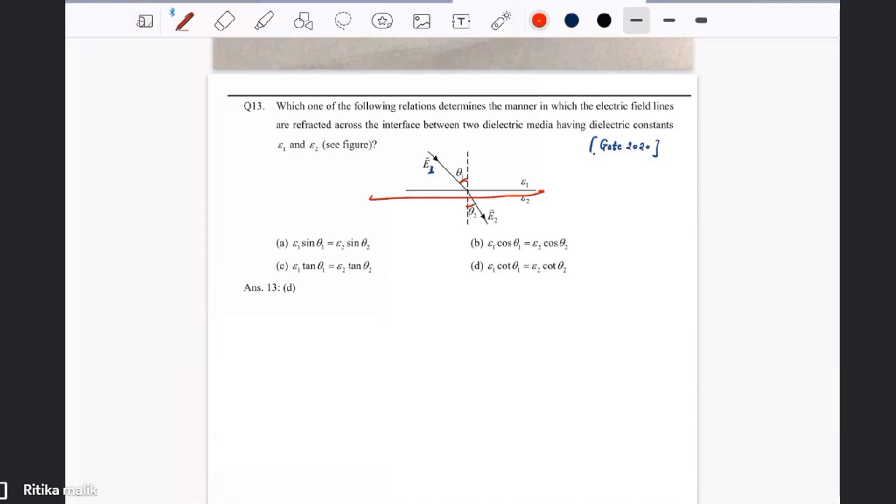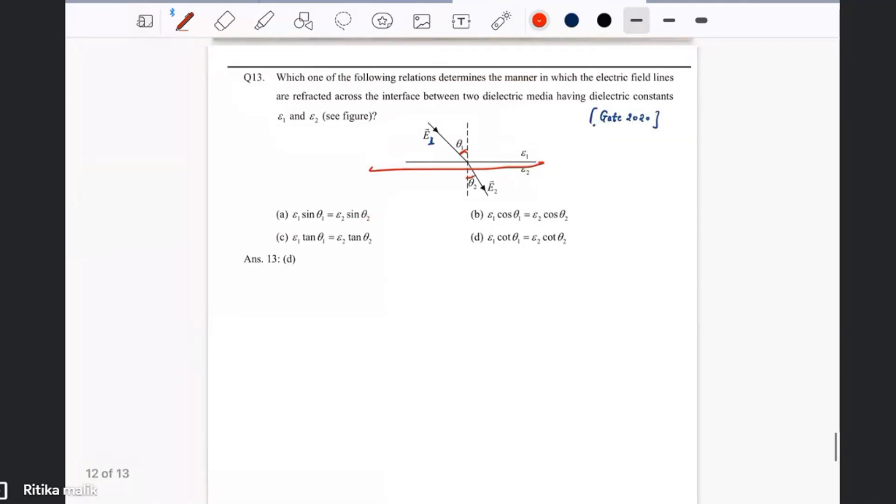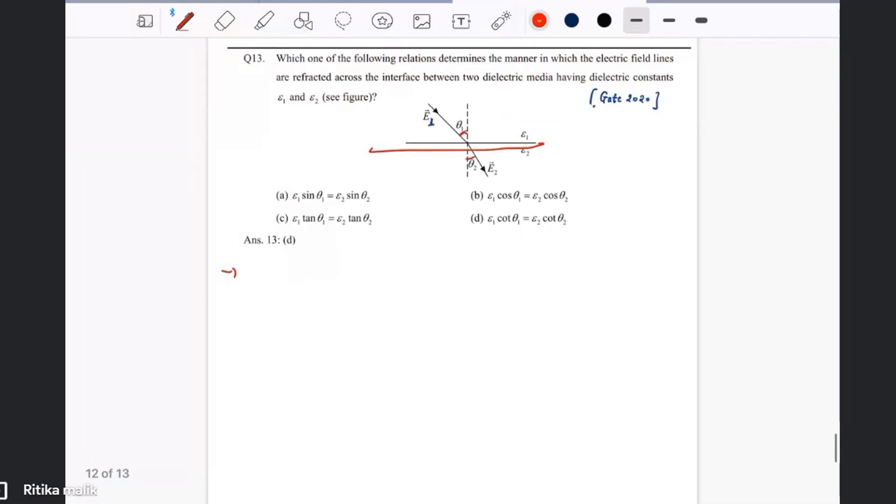The electric permittivity of the surface is epsilon 1 and epsilon 2 for the two surfaces, and we have to find which relation is correct. So how we go towards solving this question is we just break this. Let me draw it again.